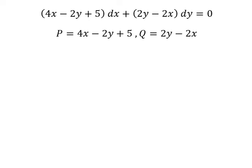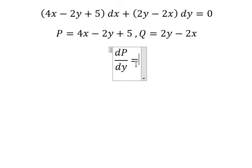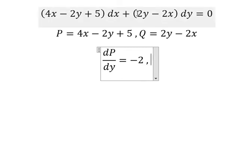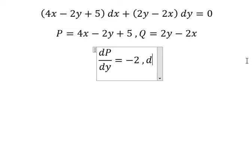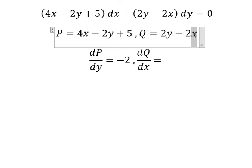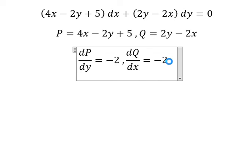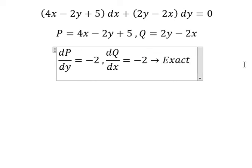That means we need to do first the differential of B with respect to Y. First the differential of Y — we have number one, so we have negative number two. That means we need to do first the differential of Q with respect to S. First the differential of S — we have number one, so we have negative number two. And we see that this one equals to this one, and that is about exact.